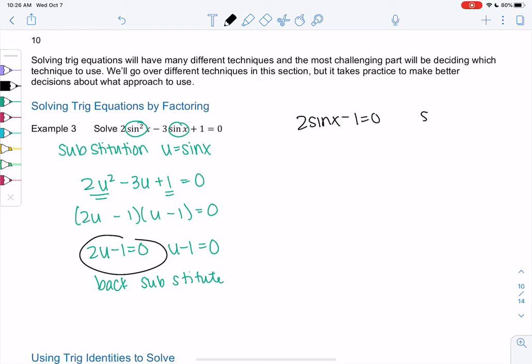We get 2 sine x minus 1 equals 0 and then we'll also do sine x minus 1 equals 0. You can factor with sine but I think it's intimidating, so you can do it if you feel like it. Otherwise the u sub, the substitution, is really nice. So we get 2 sine x is 1, so sine x is 1 half.